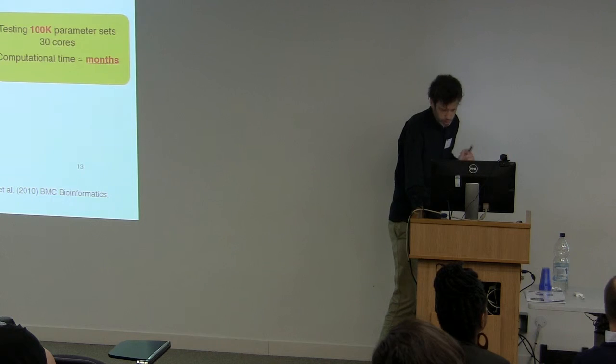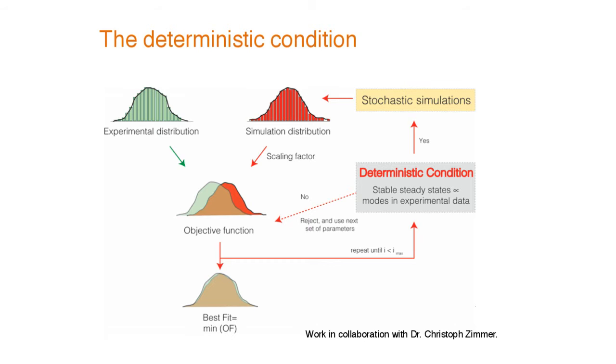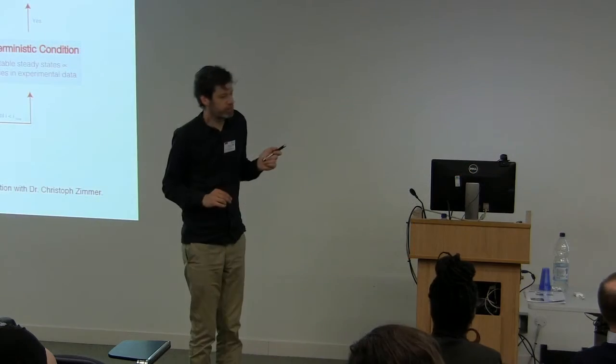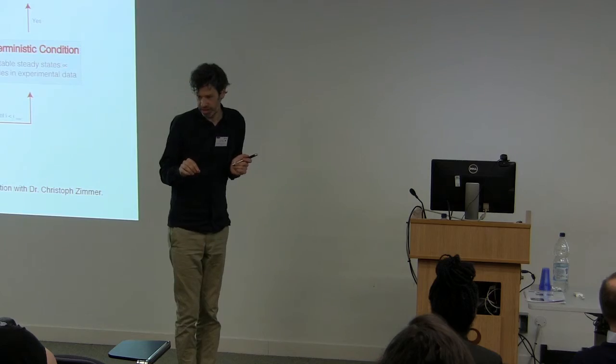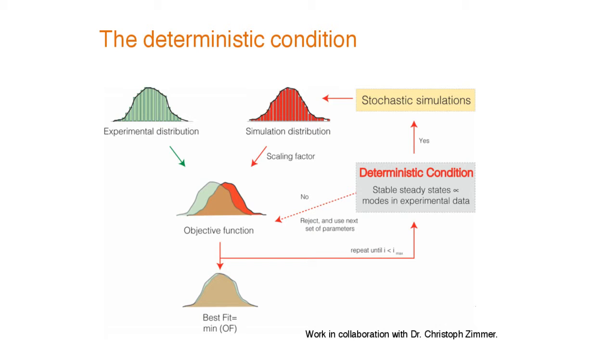Now comes the trick, and that's the main point of Luis's approach: to make that much more efficient, he added an additional step of using a deterministic condition to decide whether it's worth doing the actual stochastic calculation. What happens here is a random parameter set is selected, and then for the deterministic model we calculate the steady states, the stability of the steady states, and the number of steady states. There is a reasonable assumption that if the stochastic model is supposed to be bimodal, the deterministic version should have two stable steady states. You can also test if the two stable steady states are similar to the maxima of the peaks of the observed distribution. That's a little bit heuristic, but it's a reasonable assumption.